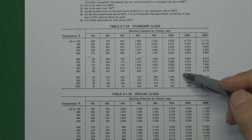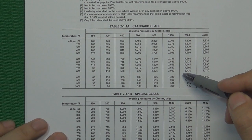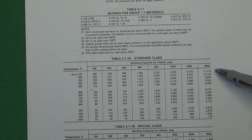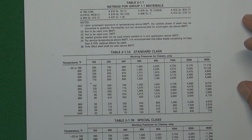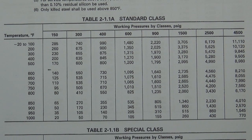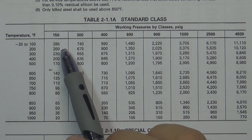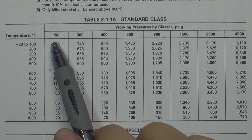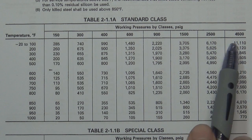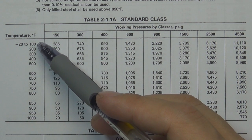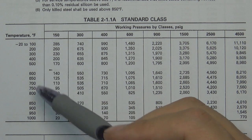When looking at the pressure-temperature reading table, consider two things: first, the material; second, the connection type. Then you can find the correct table to use. In the table, the horizontal axis is divided into different pressure classes from 150 to 4500, and the vertical axis is divided into different temperature ranges from 100 to 1000.